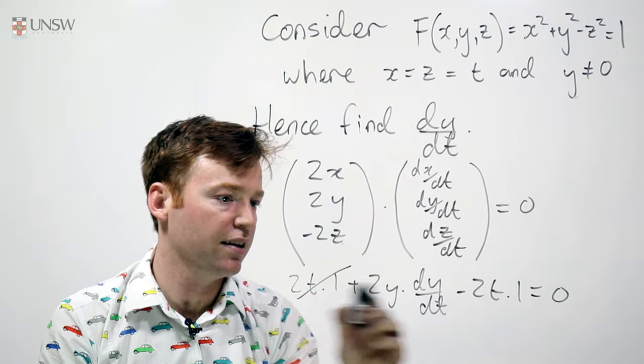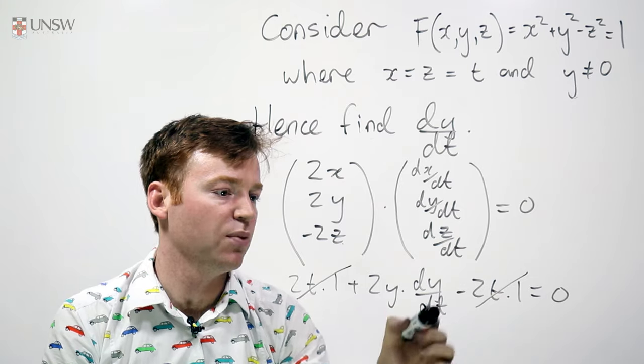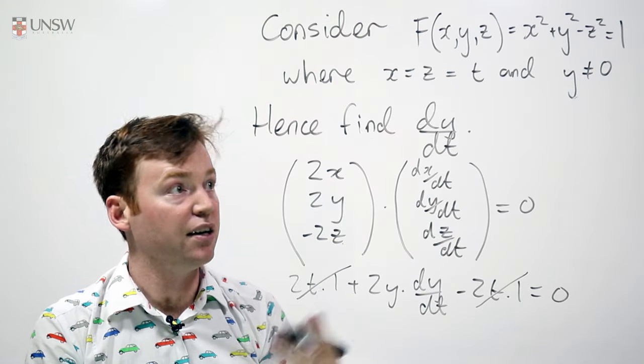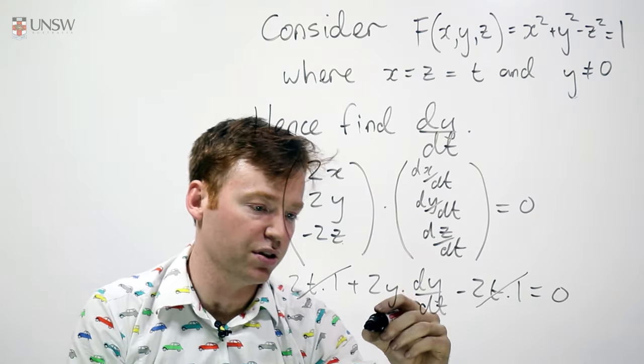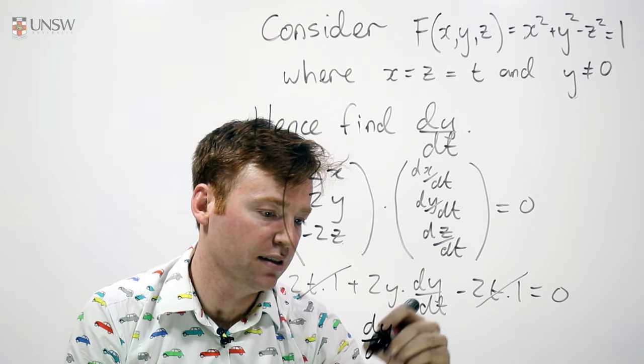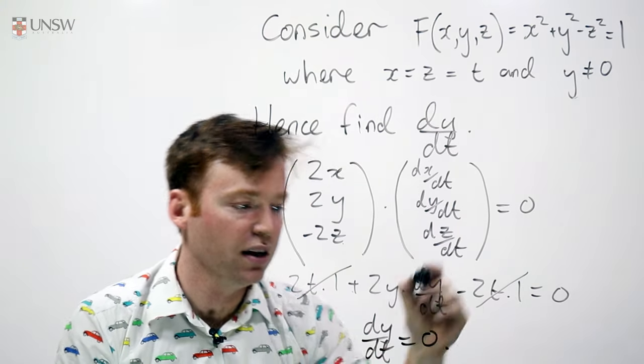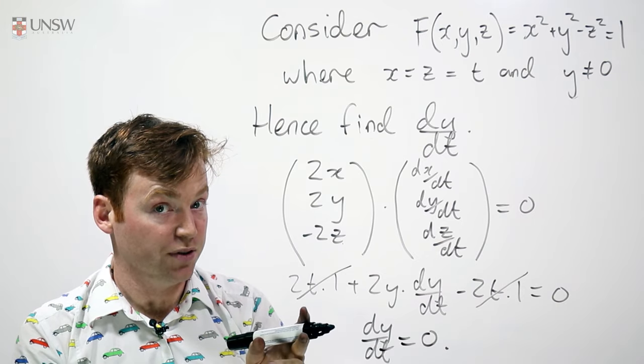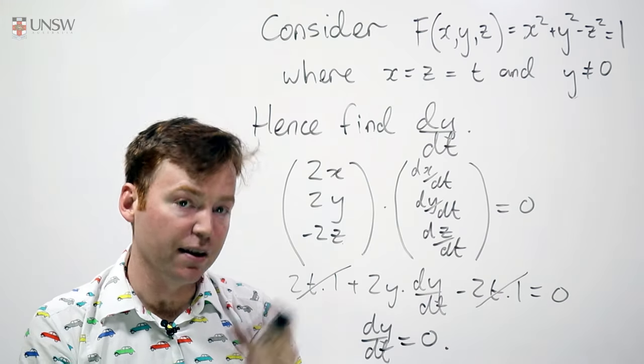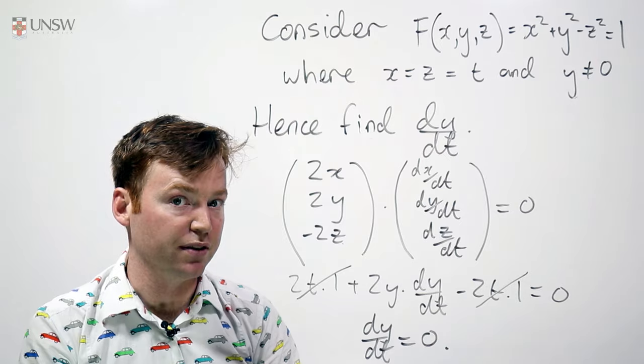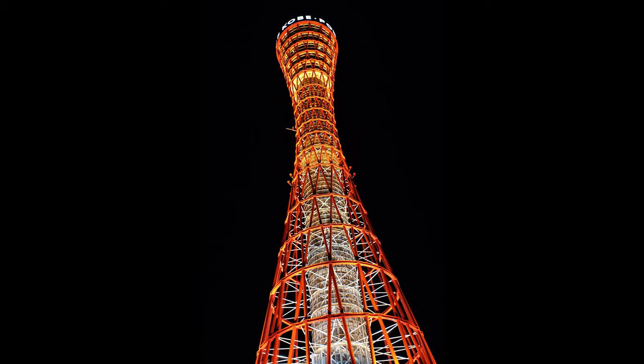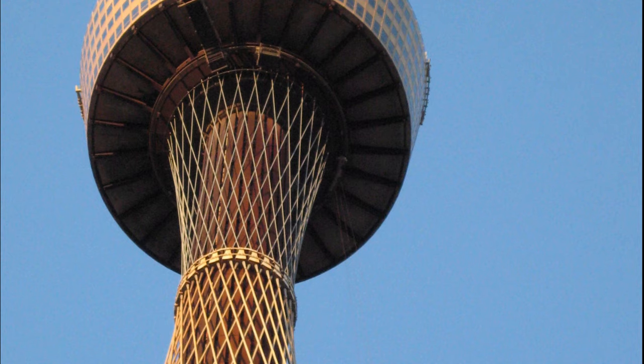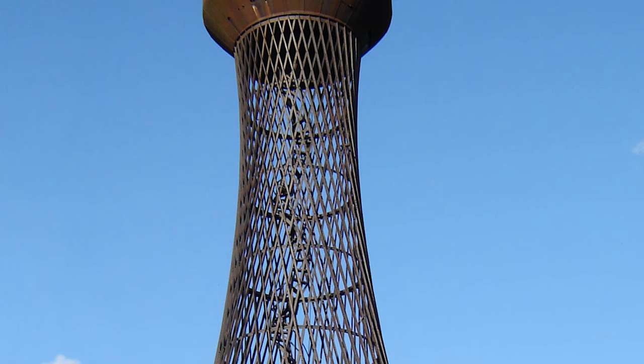So that cancels with that and I get 2y dy/dt is equal to 0 and I know from the question that y is not equal to 0 so dy/dt is equal to 0 and I did it without knowing what y was. And that's the real power of the chain rule here.